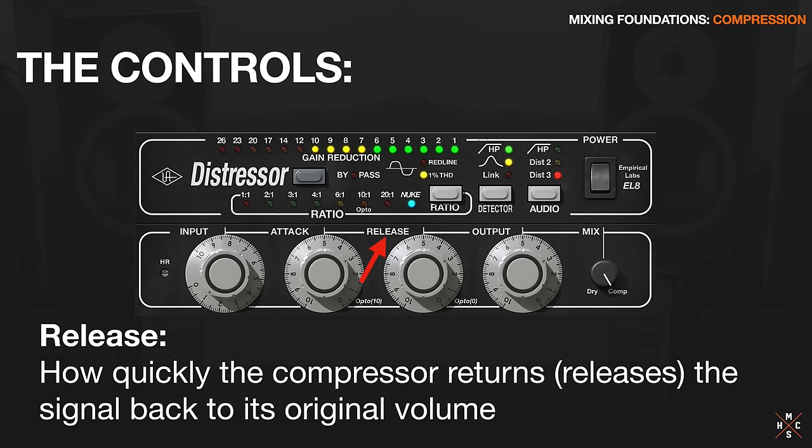You want to simplify this in your mind. A slower release means it's going to have more of a smoother compression sound because it's changing the level less drastically. Whereas a faster release sounds more aggressive because the level's getting turned down and then returned back up very rapidly - the level's changing very quickly.